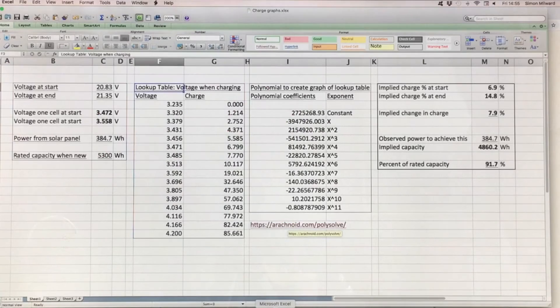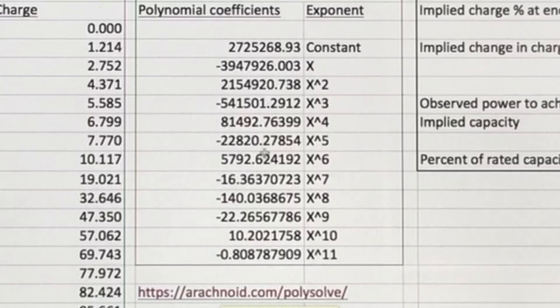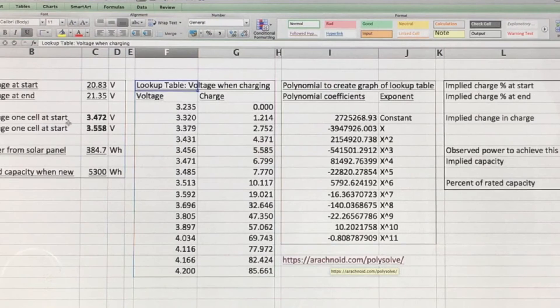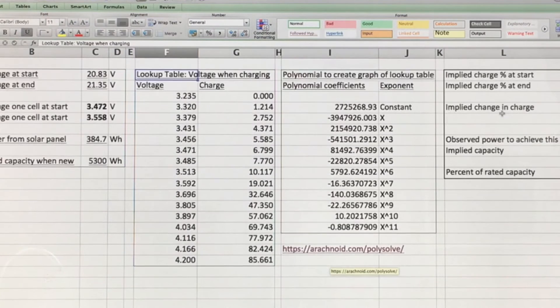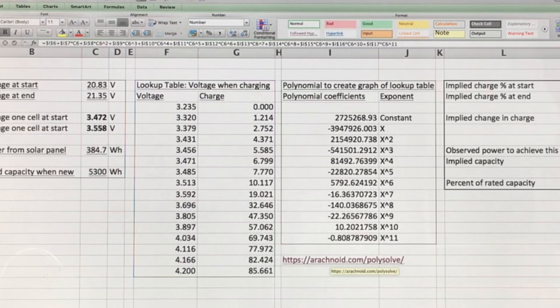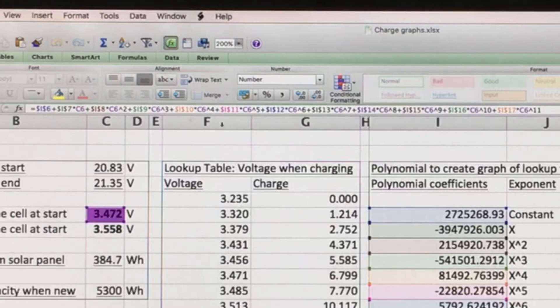I've got those coefficients here and they correspond to these x being voltage. So then put that equation in here. You can see the equation here. Each of these coefficients multiplied by the voltage which is C6.